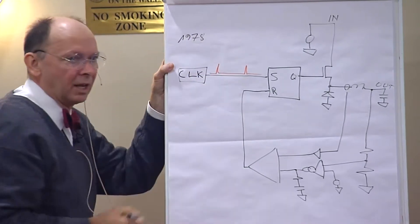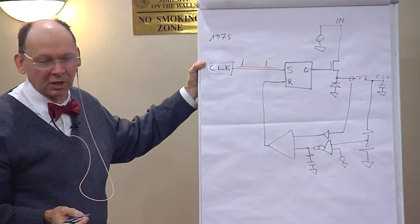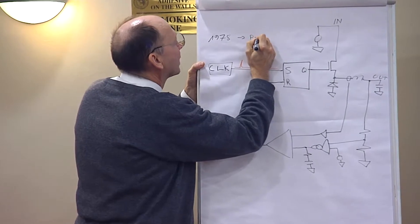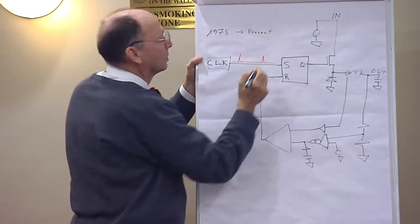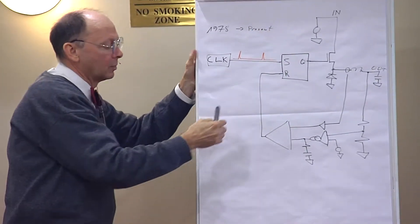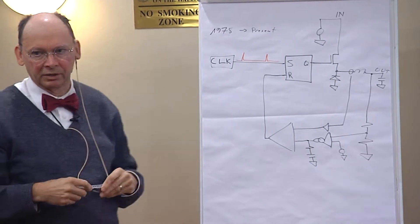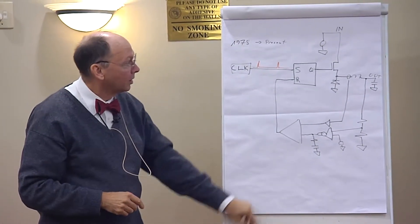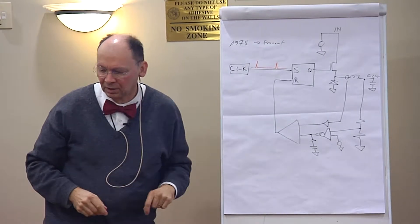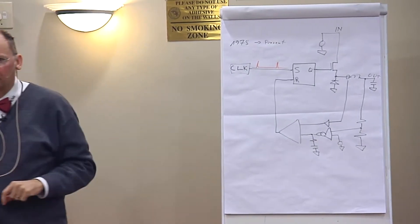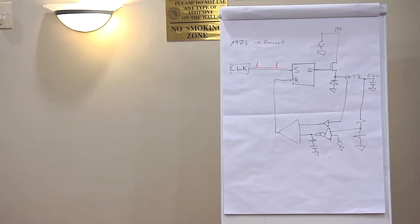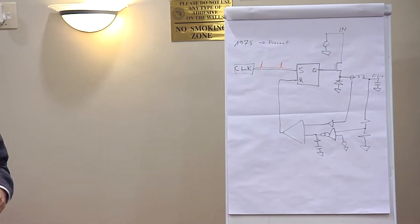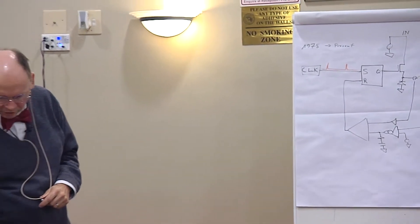This method was invented in 1978. By the 1980s it took over switch-mode power supply design and nobody has looked back since. Just why current mode is better than voltage mode is something I'll get into in about an hour. But all you need to know right now is that's a current-mode controller, and to implement current-mode control you need to sense the inductor current.